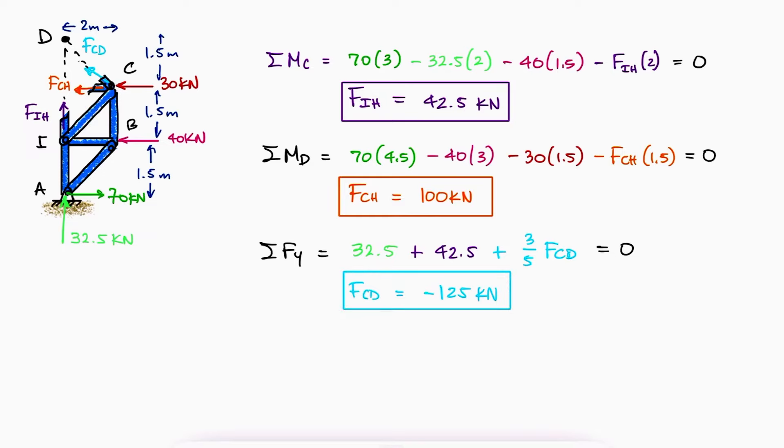Notice once again that I used CD or DC interchangeably as well as CH and HC or IH and HI because the magnitude of the vectors is the same. Yet another advantage of being consistent.